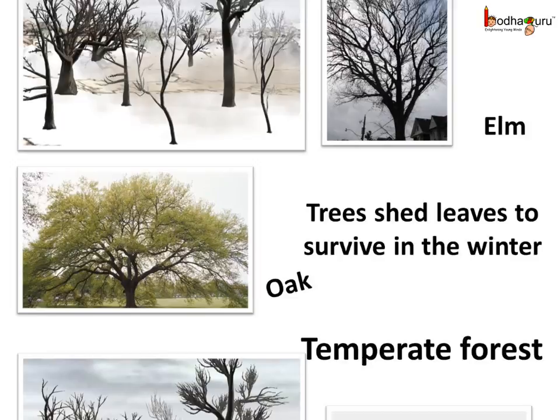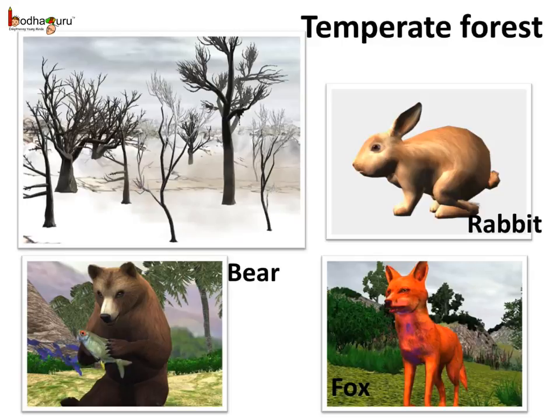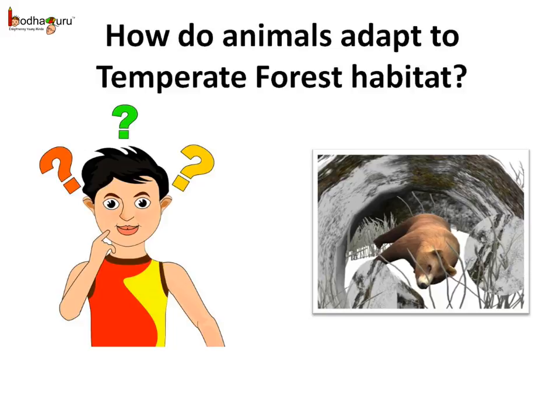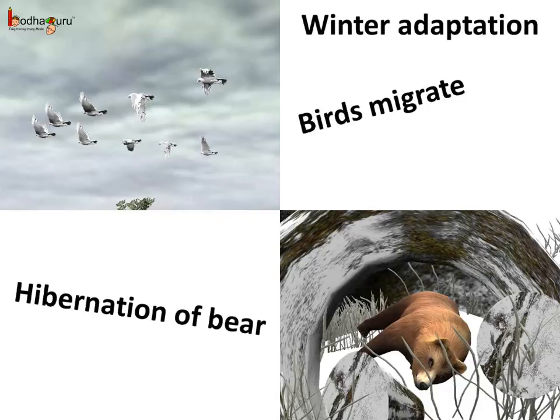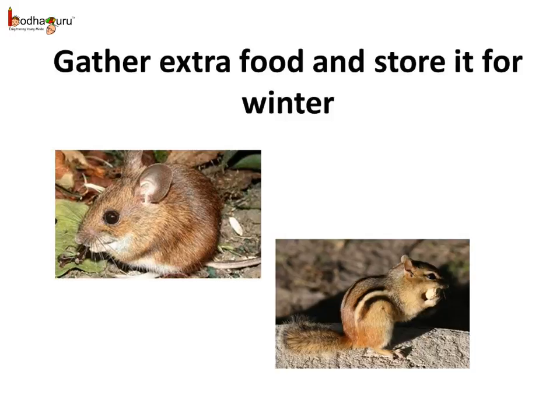Let us see the animals found in the temperate forests. The black bear, fox, mountain lion, bobcat, rabbit etc. can be found in these forests. How do animals adapt to the temperate forest habitat? As the temperature becomes too low in the winter, many animals and birds migrate to warmer places. Many animals hibernate to avoid the harsh climate, like the black bear and hedgehog etc. As food is also scarce in the winter, some animals, for example chipmunk and squirrel, gather and store it for later use.